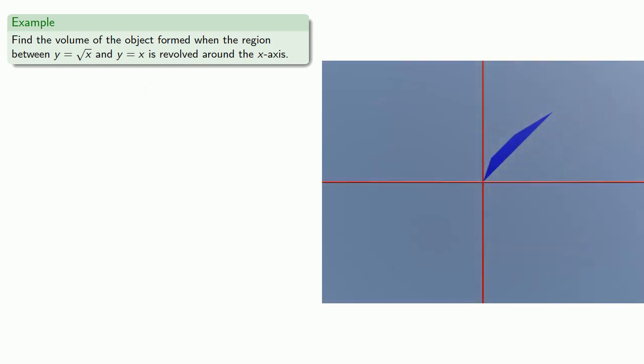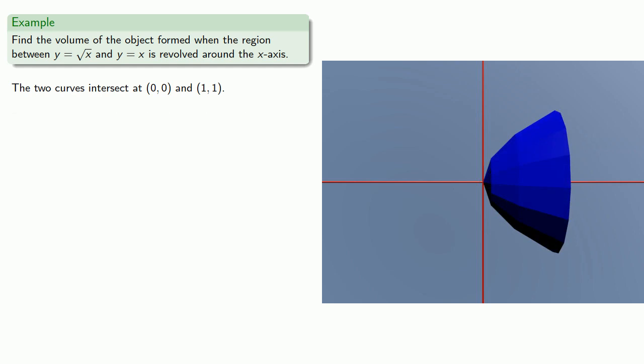Now let's find that volume. The two curves intersect at (0, 0) and (1, 1). Now if we fill in the part between the region and the x-axis, then revolve around the x-axis, the volume of the solid produced when the whole region is revolved around the x-axis is going to be...